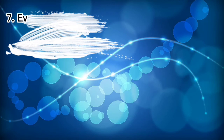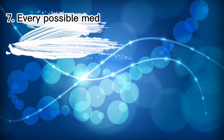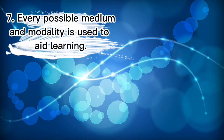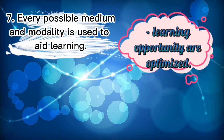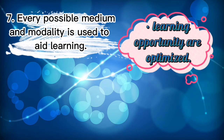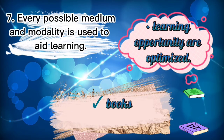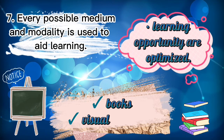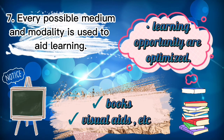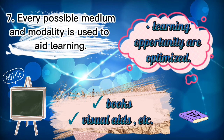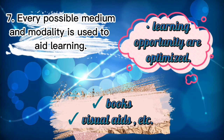Seventh on the list is that every possible medium and modality is used to aid learning. This principle exists to ensure that learning opportunities are optimized. Learning aids may come in the form of books, visual aids, and other items that may assist in the language learning process.